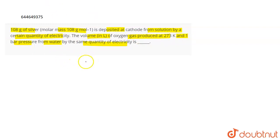So the reactions that take place is that first Ag+ will be deposited at cathode. And the other reaction that takes place for the deposition of oxygen gas is that 2H2O gives O2 plus 4H+ plus 4 electrons.